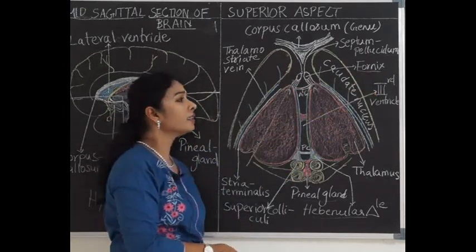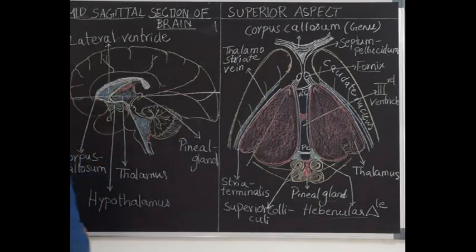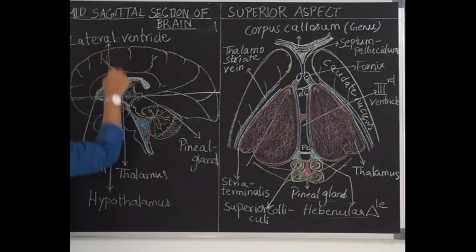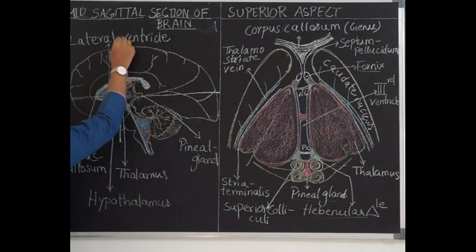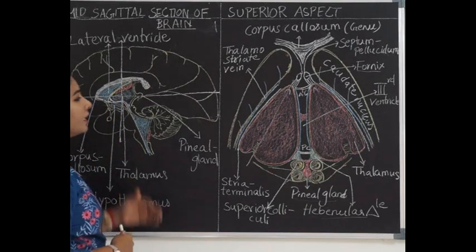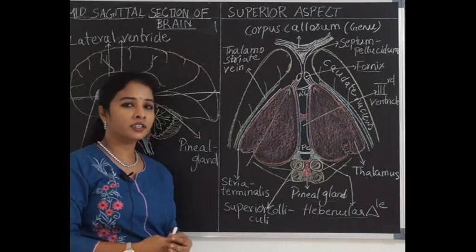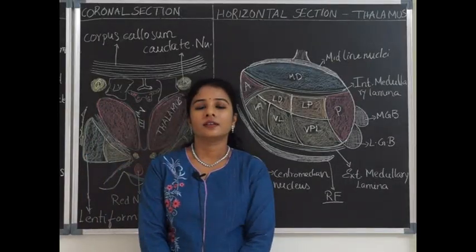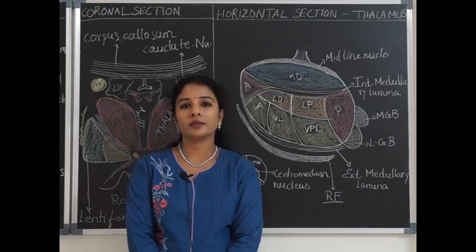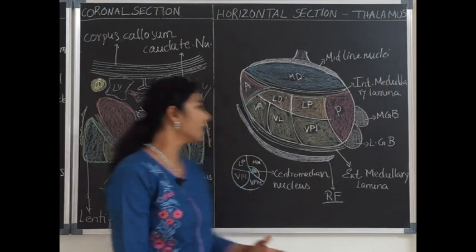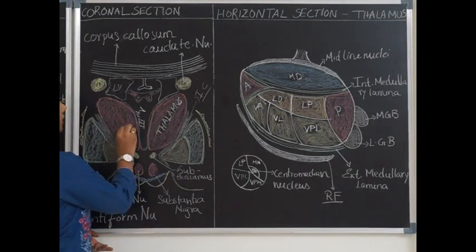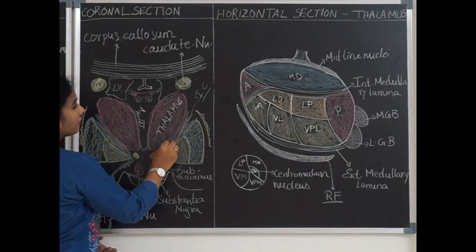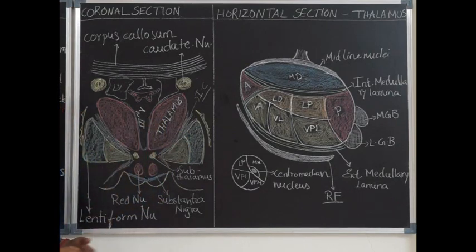Now let's see the relations of thalamus in coronal section. The coronal section is taken at the level of the body of the corpus callosum. In this coronal section we can see the superior and inferior surfaces of the thalamus along with its relations. The thalamus has a superior surface, inferior surface, lateral surface and medial surface.